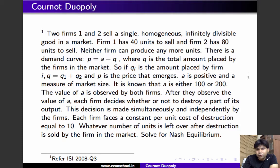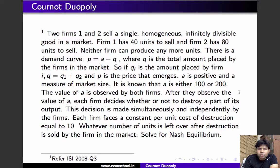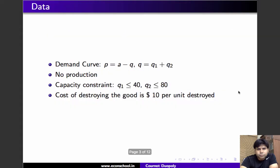The value of a will be observed by both firms. After observing a, each firm decides whether or not to destroy part of its output — they can either sell it or destroy it. This decision is made simultaneously and independently. Each firm faces a constant per unit cost of destruction equal to 10. Whatever units remain after destruction are sold in the market. We need to solve for the Nash equilibrium.